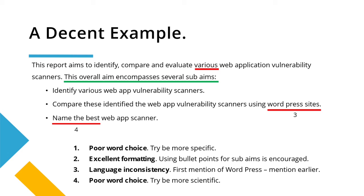Number three: they've mentioned that it's going to be looking at WordPress sites, but that has been introduced a bit too late in the aims — it's the second-to-last bullet point. We want to make sure it's further up, so maybe 'various' can get changed to 'WordPress sites' right at the start — that might be great. The last point is similar to before: 'name the best' isn't scientific enough. Something like 'evaluate and analyze to identify the most effective web application scanner' would be a more scientific and effective way to write that last bullet point.